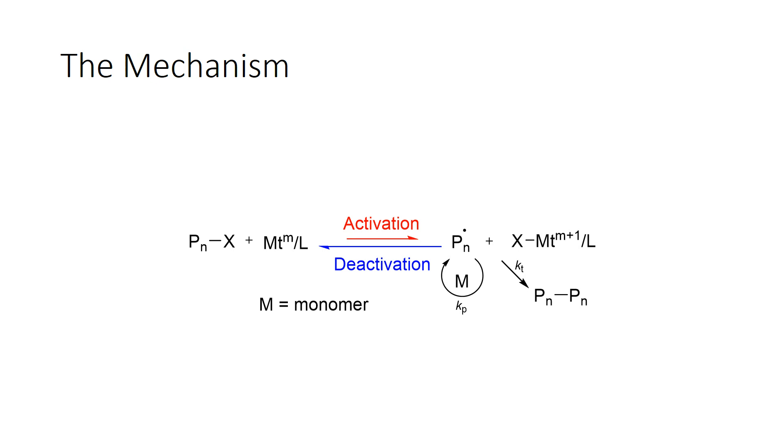This equilibrium, as illustrated, always shifts very far to the left so it's very deactivated. So only a very little amount of the time the propagating radical is present and most of the time it's dormant species present. If you look at this structure here, it's a generic structure of the so-called polymerization initiator.